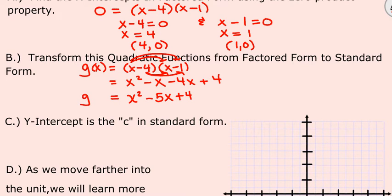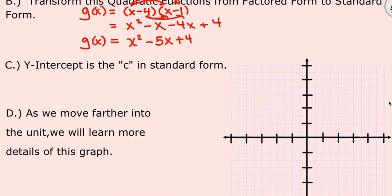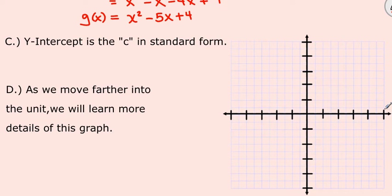So now we've created our function in standard form, which like I said earlier, we will spend some more time on that in this unit. The last thing I want us to pick out is the c. If you remember our standard form, there's the ax squared, the bx, and then the c. The c is what we want. What the c represents in our graph is the y-intercept, where it crosses the y-axis. So our y-intercept is over 0, up 4.